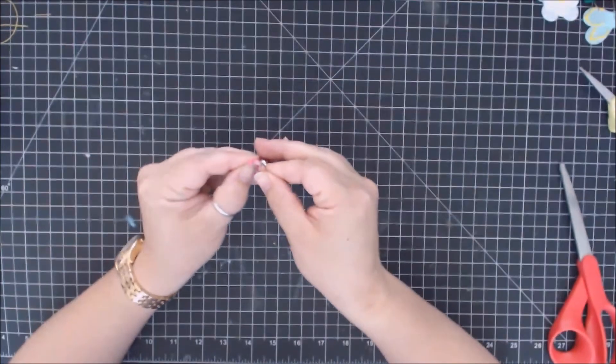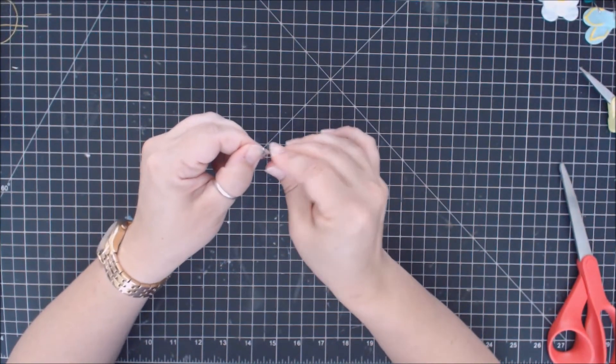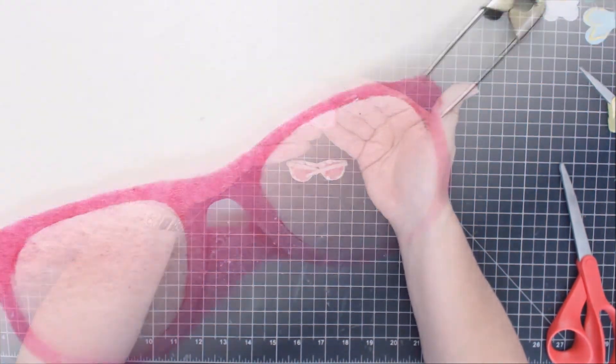When you feel like your sunglasses are dry, all you have to do is poke your little swap clip right through the corner, and you have your cute little swap.